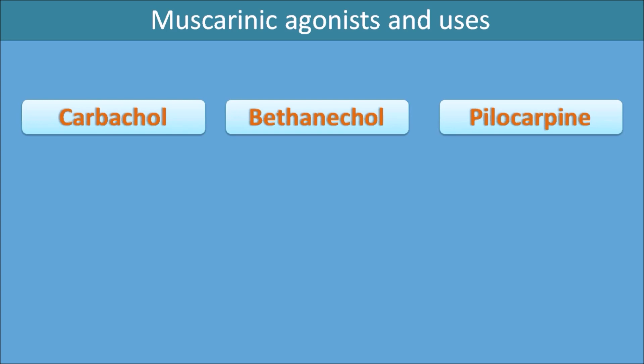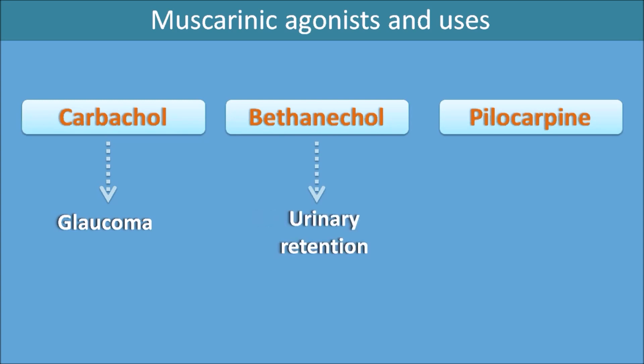Carbachol is used in the treatment of glaucoma. Bethanechol is used in urinary retention — it increases bladder contraction, thereby promoting urination. Bethanechol is also used in conditions like GI hypotonia, where the intestinal smooth muscle is not contracting, as it can increase the contraction of GI smooth muscle.